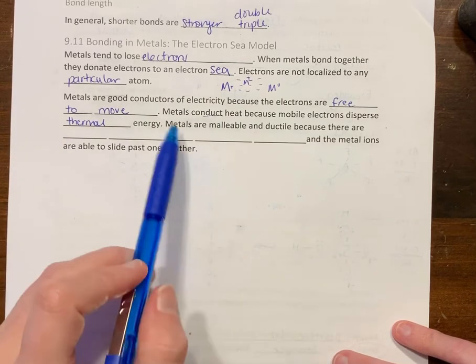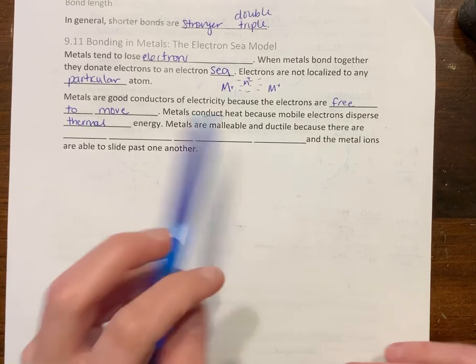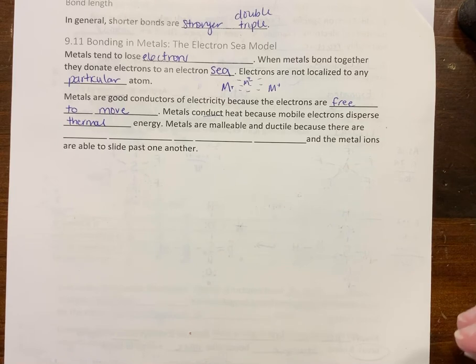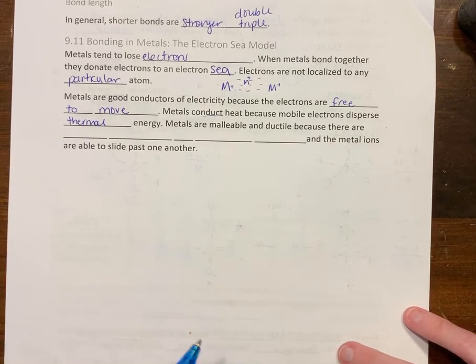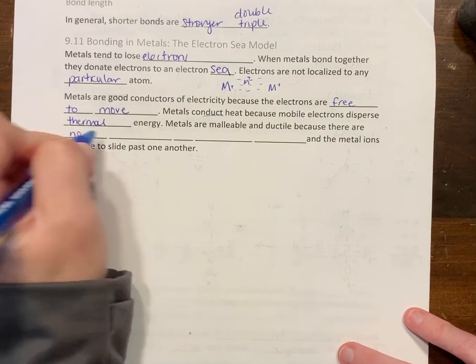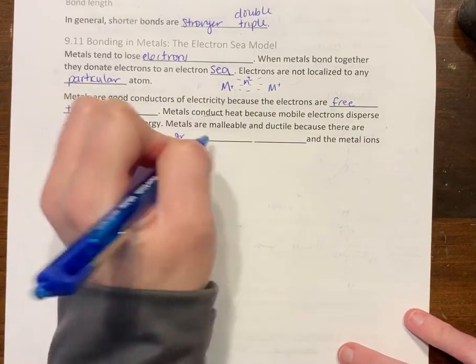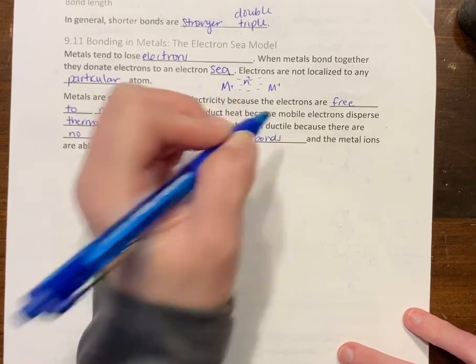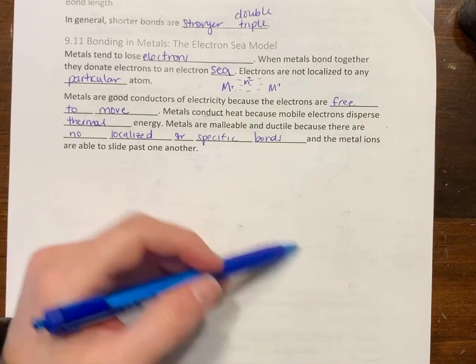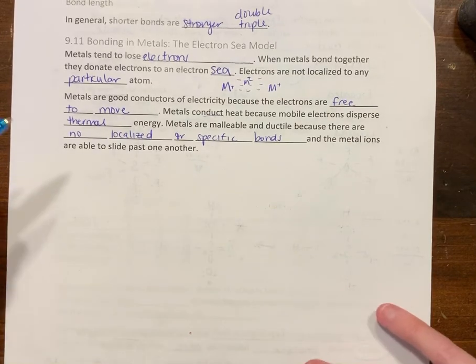Metals are malleable and ductile. One is you can pull it into a rope, the other is you can hammer it into a sheet, because there are no localized or specific bonds like an ionic compound with that rigid lattice crystal structure, or in a covalent bond.